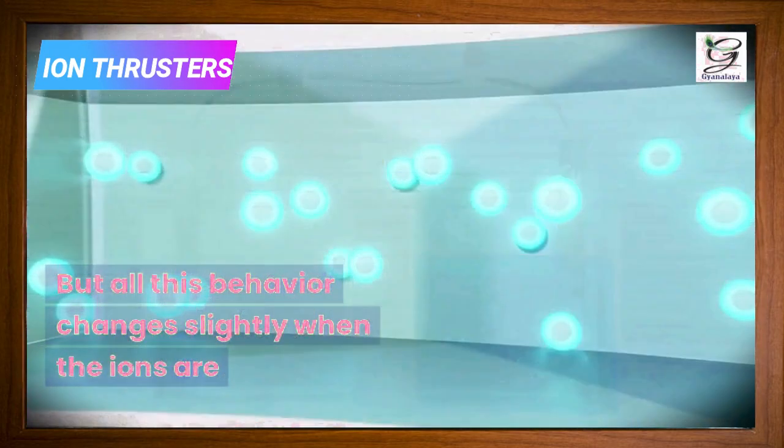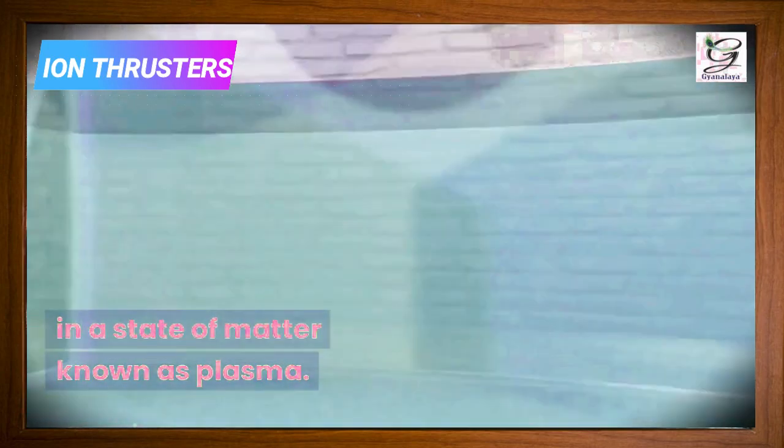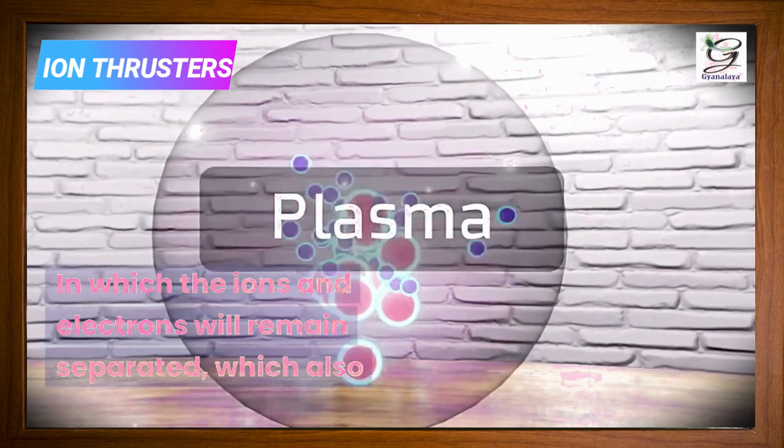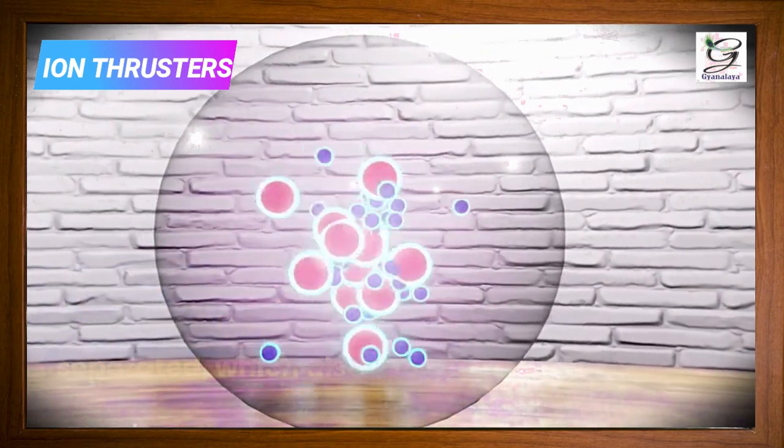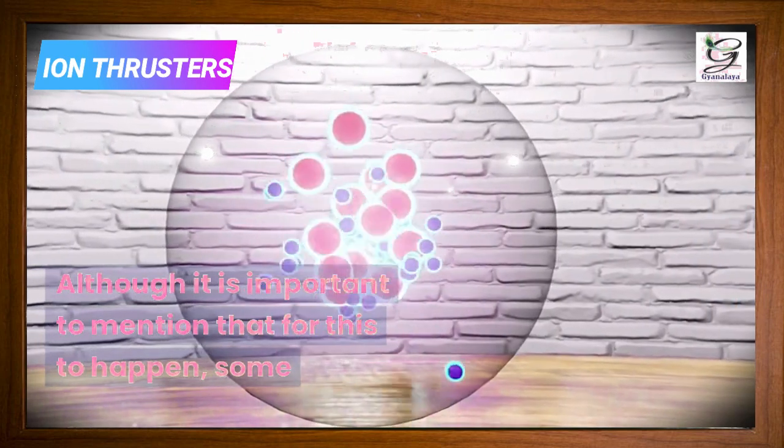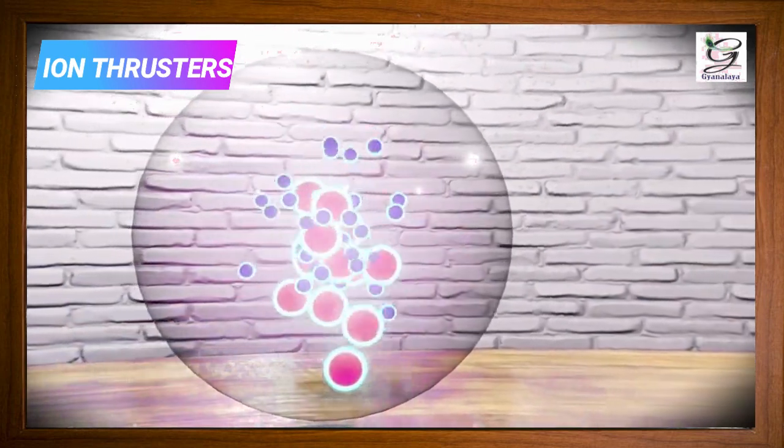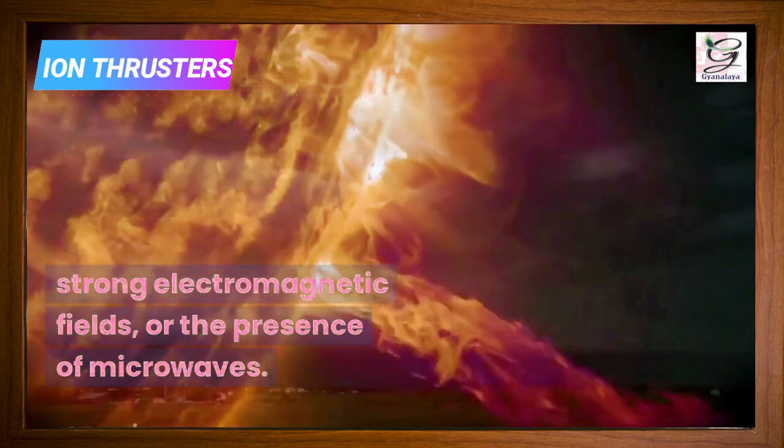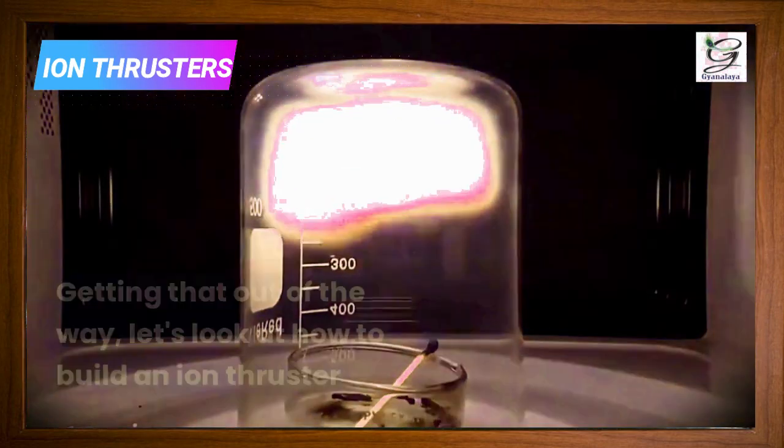But all this behavior changes slightly when the ions are in a state of matter known as plasma, in which the ions and electrons will remain separated, which also allows them to act as electrical conductors. Although it is important to mention that for this to happen, some conditions must usually be met, such as high temperatures, strong electromagnetic fields, or the presence of microwaves.